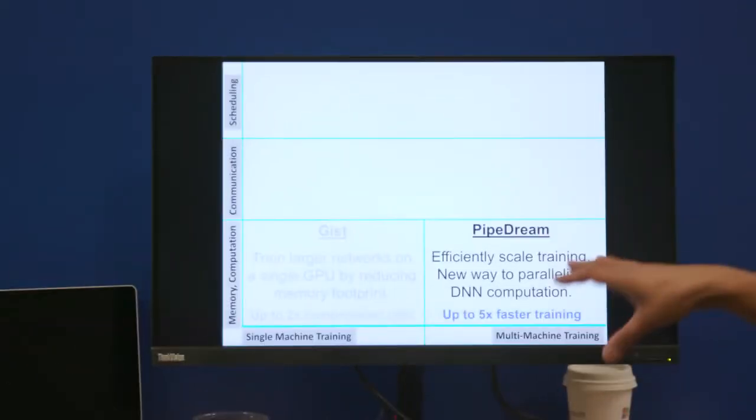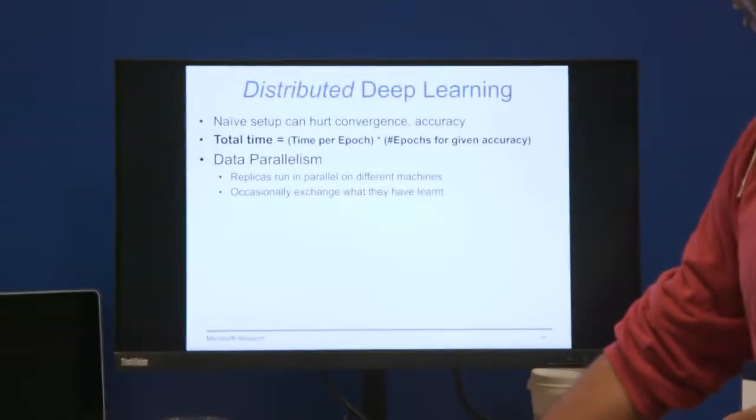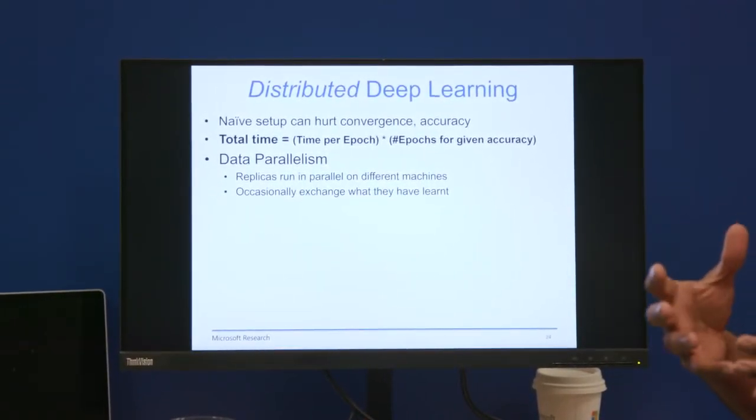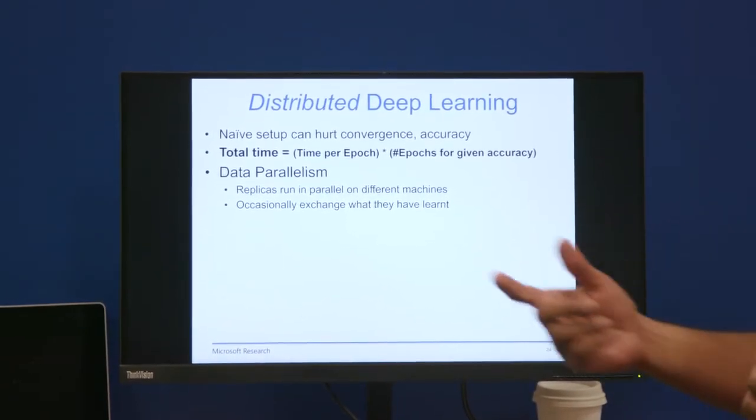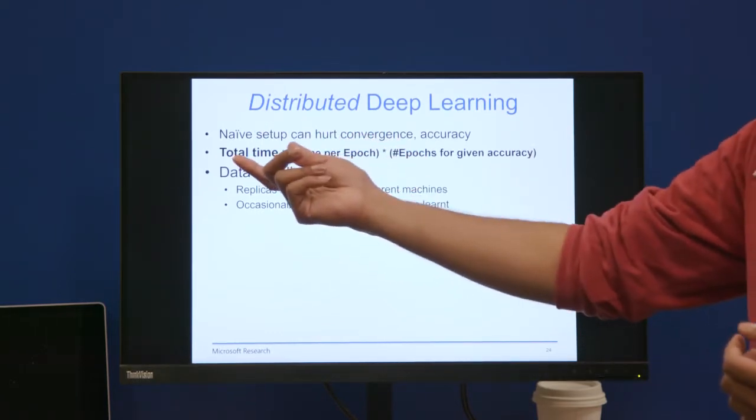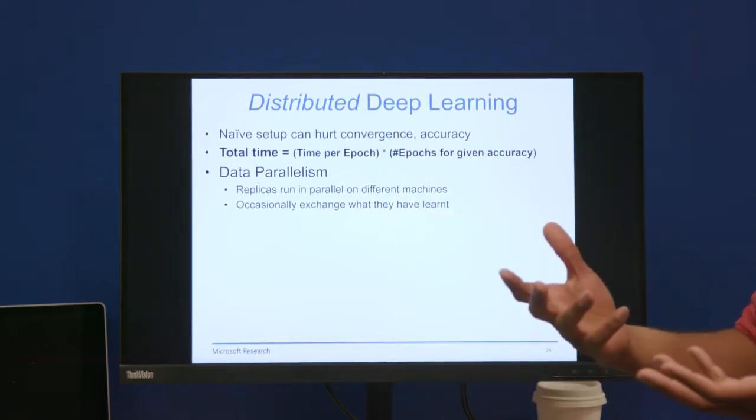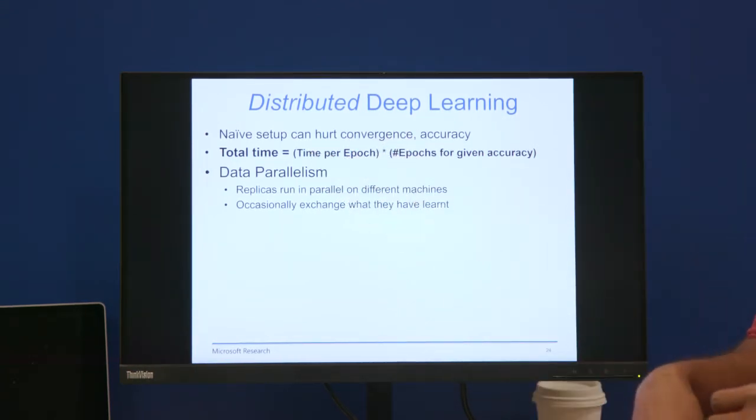Let me talk about PipeDream, which is a new way to parallelize DNN computation. The most important thing to note here is naive parallelization can hurt DNN training. Because if you naively parallelize something, you might actually be increasing the total time for training. Total time of training depends on two things: time per epoch and the number of epochs for a given accuracy. And while you might decrease the time per epoch, you might be increasing the number of epochs effectively.